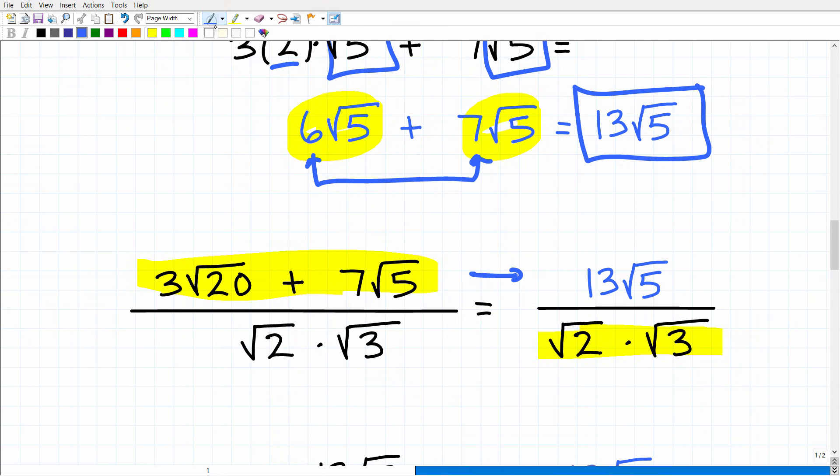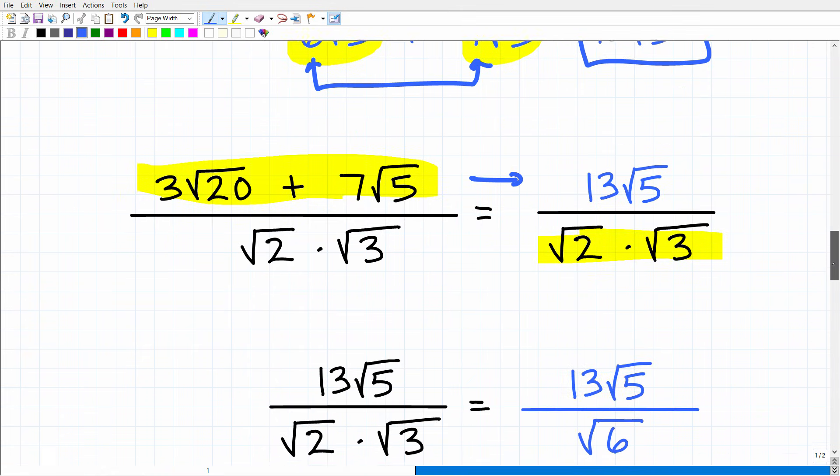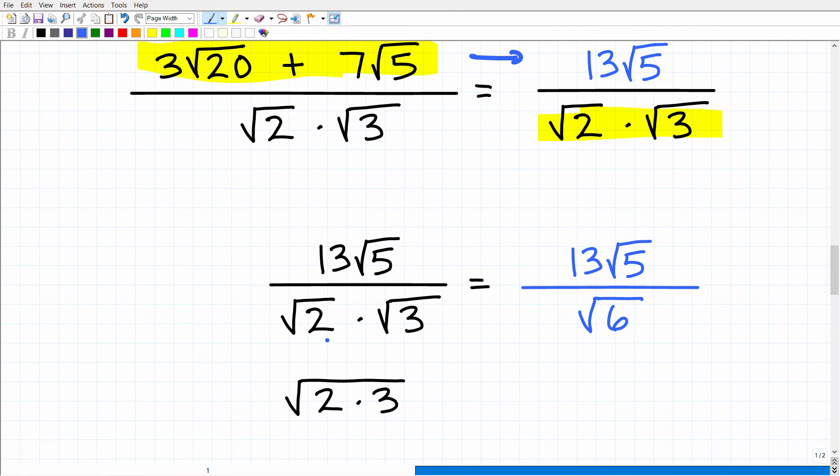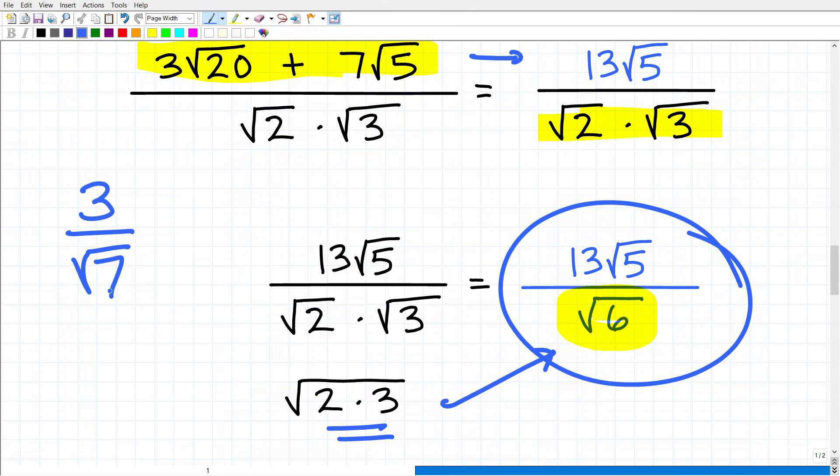And now we have square root of 2 times the square root of 3 in the denominator. So this is pretty easy. The square root of 2 times the square root of 3. We can write this as the square root of 2 times 3, which is the square root of 6. Now, if you left your answer like this, that is not correct because we have a problem here. We have an irrational number in the denominator. Remember, you cannot leave your answer like that. This would be like if you have 3 over square root of 7. Well, this is not allowed. So we have to rationalize the denominator. Now, in this case, what you would do is you would multiply both the numerator and denominator by the square root of 7. So that's what we're going to have to do here. We're going to have to rewrite this.